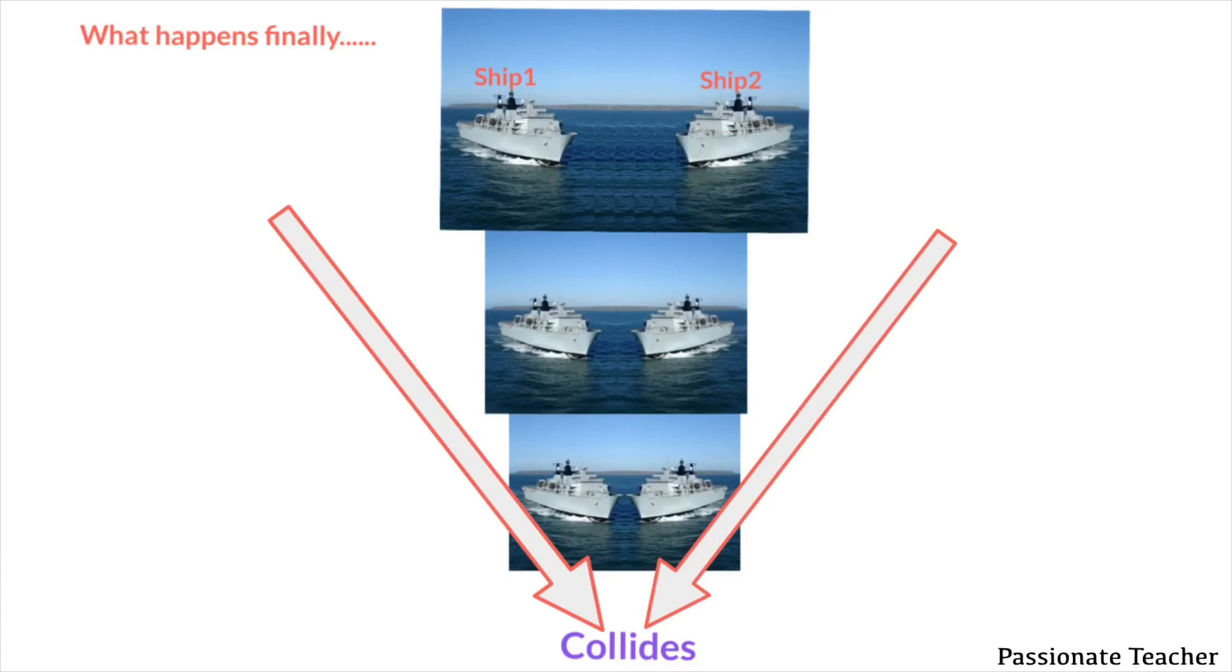Because of this, Ship 1 and Ship 2 both will change their direction of the movement and after some time both will collide as shown in the figure. This is the reason why ships always travel with some gap in between them.